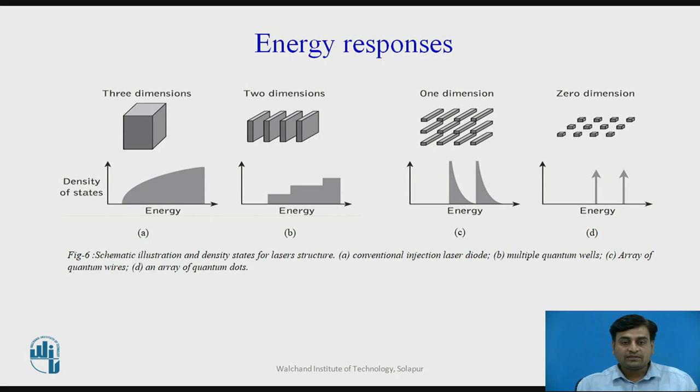However, when this structure is reduced to one dimension, i.e. length only, it displays a sharp rise and an exponential fall in the carrier density. Since this one dimensional quantum well structure is confined to only the device length, then in general it appears as a long wire and hence it is known as a quantum wire which is shown in figure number 6C.